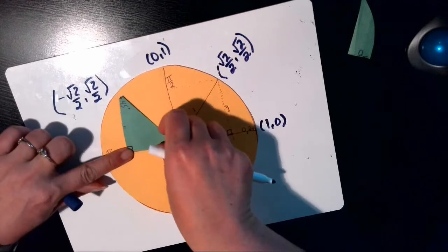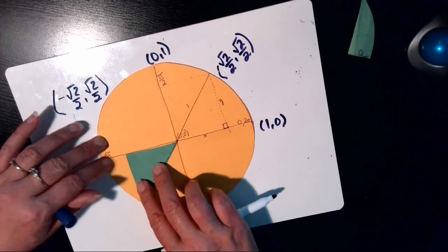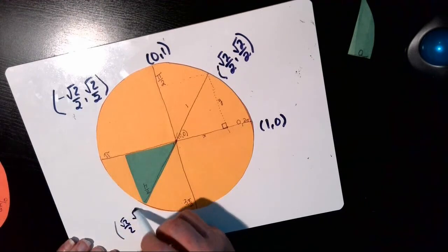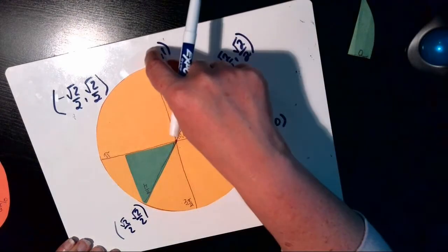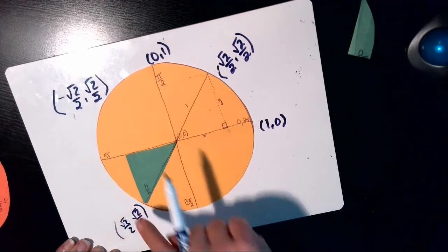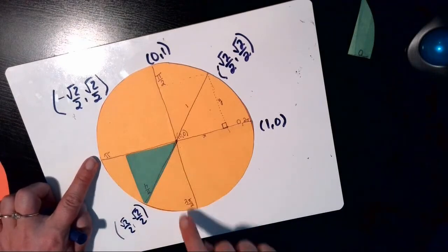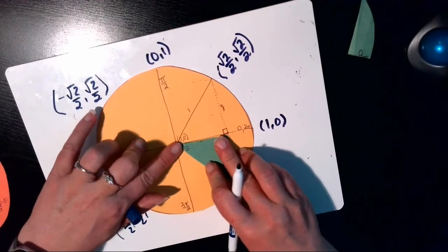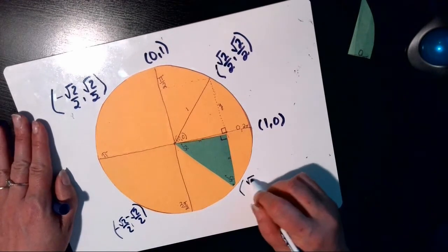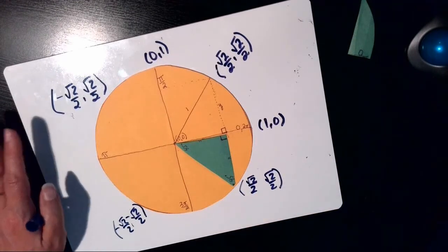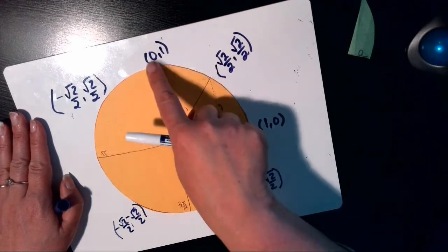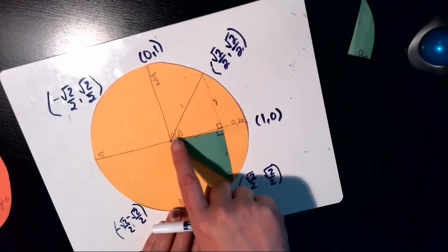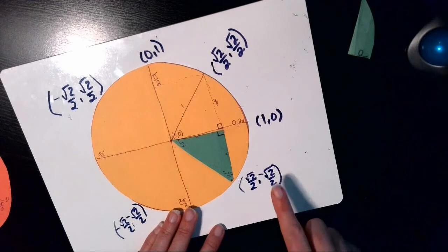If I take that same reference triangle and reflect it down into the third quadrant, I still have √2/2 and √2/2 for the x and y lengths at 5 pi over four — counting: 1 pi over four, 2 pi over four, 3 pi over four, 4 pi over four, 5 pi over four. In the third quadrant both x and y are negative, so both get negative signs. Then reflecting into the fourth quadrant at 7 pi over four — counting around the circle through 6 pi over four to 7 pi over four — the values are still √2/2 and √2/2, but in quadrant four y is negative while x is positive, so only the y coordinate gets a minus sign.